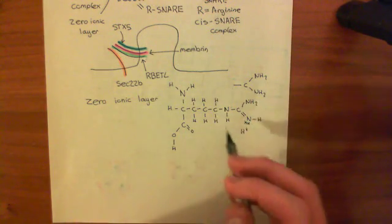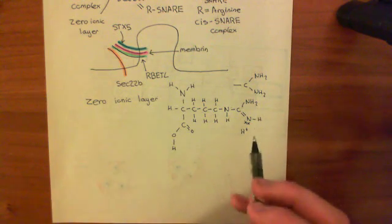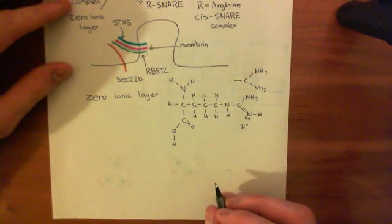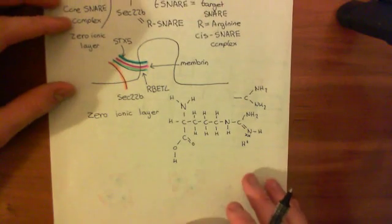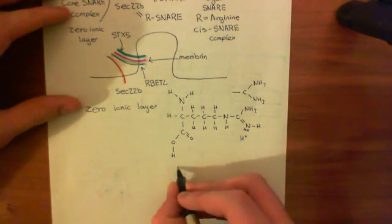So this end group, this terminal group on this arginine has a positive charge, usually. So now let's have a look at the structure of glutamine, which is single amino acid code Q.